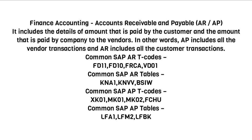Finance Accounting Accounts Receivable and Payable (AR/AP): It includes the details of the amount that is paid by the customer and the amount that is paid by the company to the vendors. In other words, AP includes all the vendor transactions and AR includes all the customer transactions. Common SAP AR T-codes: FD11, FD10, FRCA.